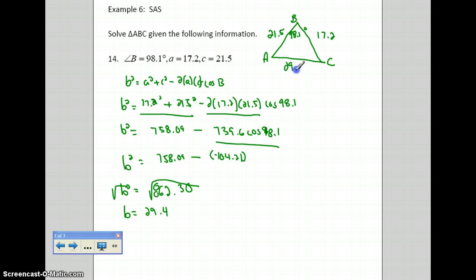So I know this is 29.4. Now I have an angle and a side that are opposite each other, so I can use the law of sines now to solve it. I can do sine of 98.1 over 29.4, and that's going to equal, let's say we'll find angle A, so sine of A over 17.2. I can cross multiply and I get sine of A equals 17.2 sine 98.1 over 29.4.